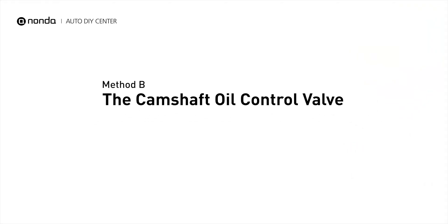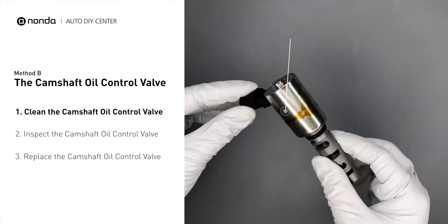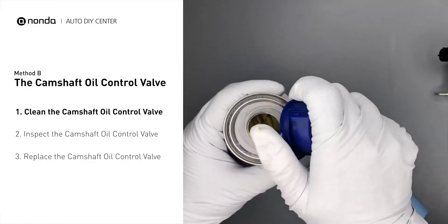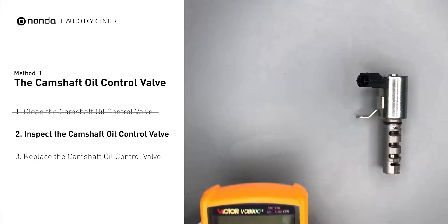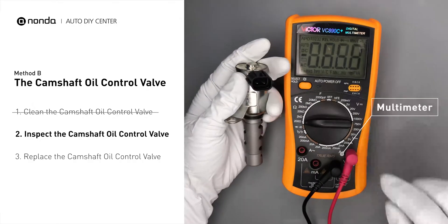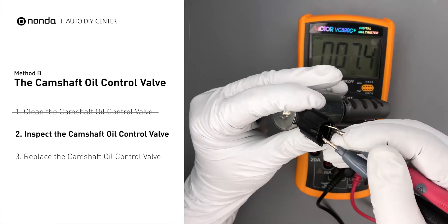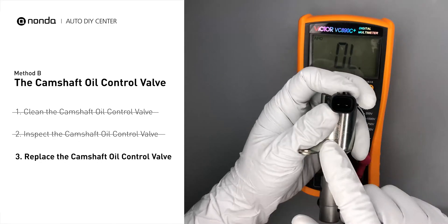Method B – The Camshaft Oil Control Valve. The camshaft oil control valves are usually located in cars that have engines with variable valve timing systems. First, carefully remove the camshaft oil control valve from the engine. Use a valve cleaner to clean the camshaft oil control valve. Then use a multimeter to test the camshaft oil control valve. At an ambient temperature of 68 degrees Fahrenheit, the valve resistance should be between 6.9 ohms and 7.9 ohms. If you do not get a reading, this indicates that the camshaft oil control valve is faulty and needs to be replaced.